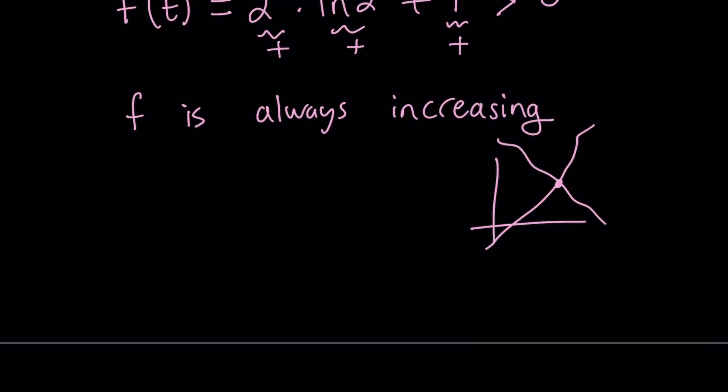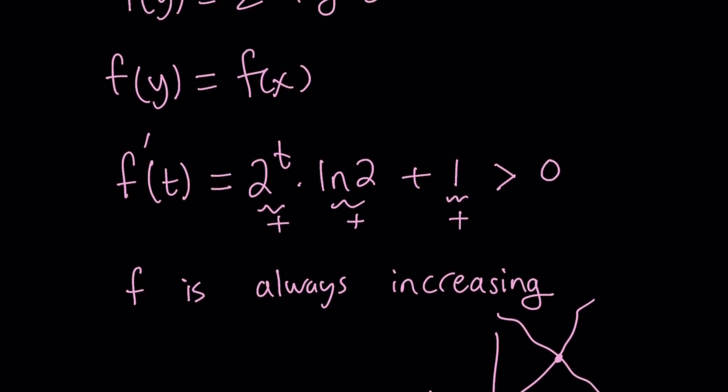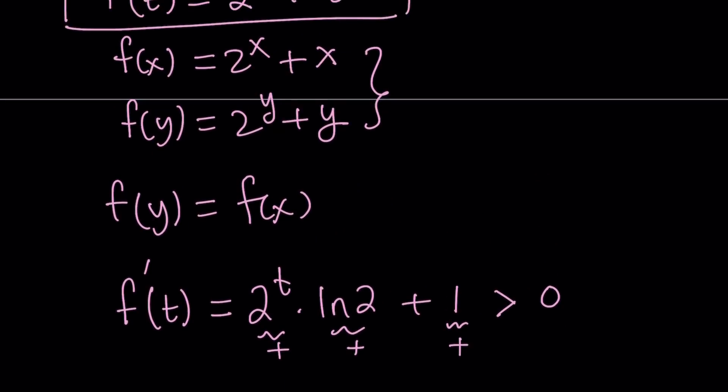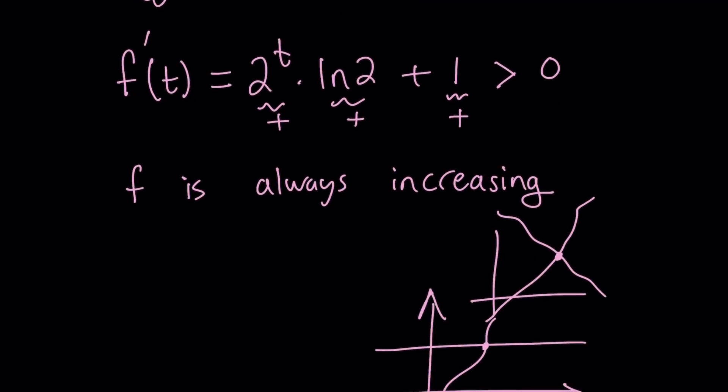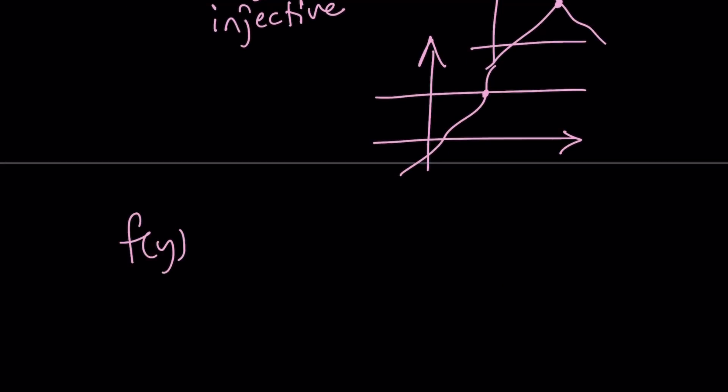Do they have to intersect? Maybe at infinity. Who knows? But they will intersect eventually. What happens if you have an increasing function and a constant, which is a horizontal line? Again, the same situation applies. We have a single intersection point. So now we can safely say that since f is always increasing, it is going to be injective or one-to-one. And since f is injective, f of y equals f of x is just going to imply y equals x.